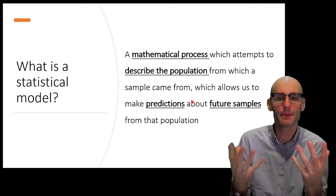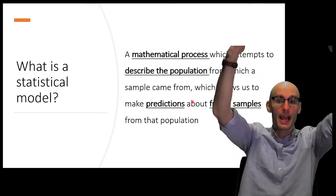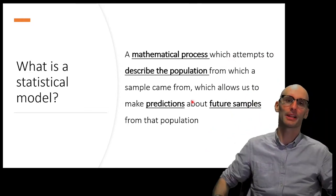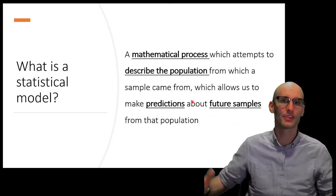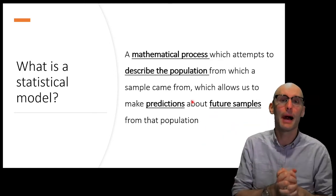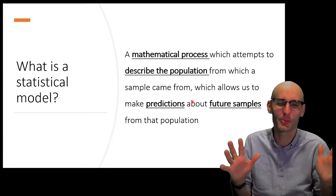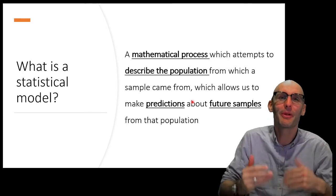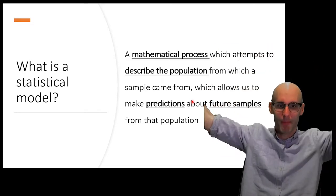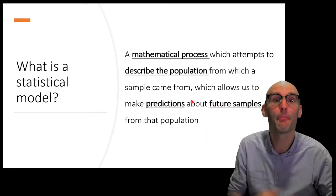So a statistical model is a mathematical process which attempts to describe the population based on the sample that it came from. So remember, we can never see the whole population. I can never look at all human beings on the planet. If I run an experiment on eight mice, there are an infinite number of mice that could have been experimented on. That sounded horrible. But what I'm saying is, when we run an experiment, we're sampling from a theoretical population of an infinite number of samples. Because you probably want to repeat my experiment.